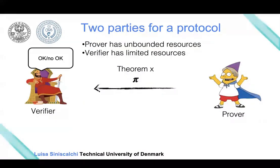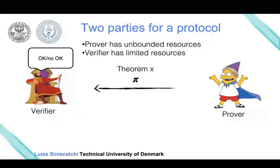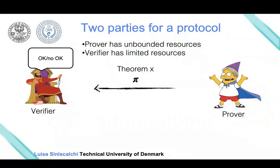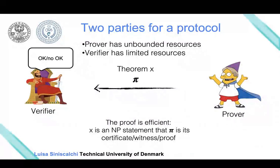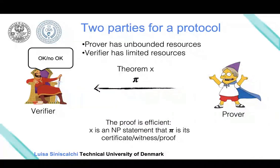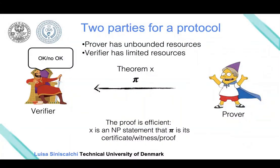We are saying that the prover is unbounded but the verifier has only polynomial time capabilities. So we are restricting ourselves to a specific class of problems called NP problems, which stands for non-deterministic polynomial time problems—a class of problems from complexity theory.